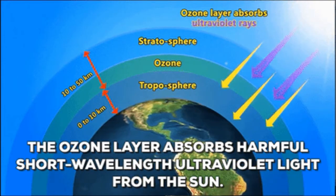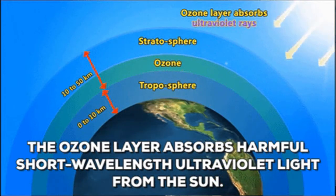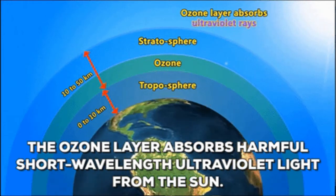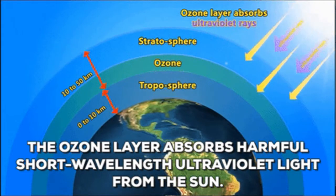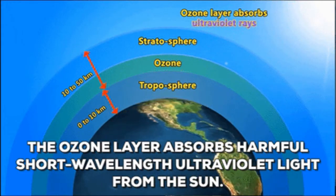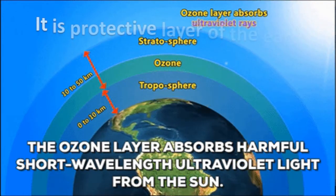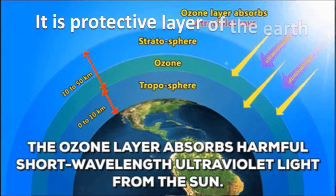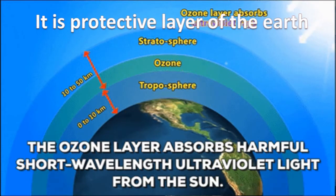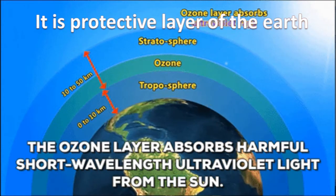The ozone layer absorbs harmful, short wavelength ultraviolet light from the sun. It absorbs and reflects maximum ultraviolet radiation from sunlight. It is also known as the protective layer of the earth. Ozone layer is the most important factor which makes earth a living planet.